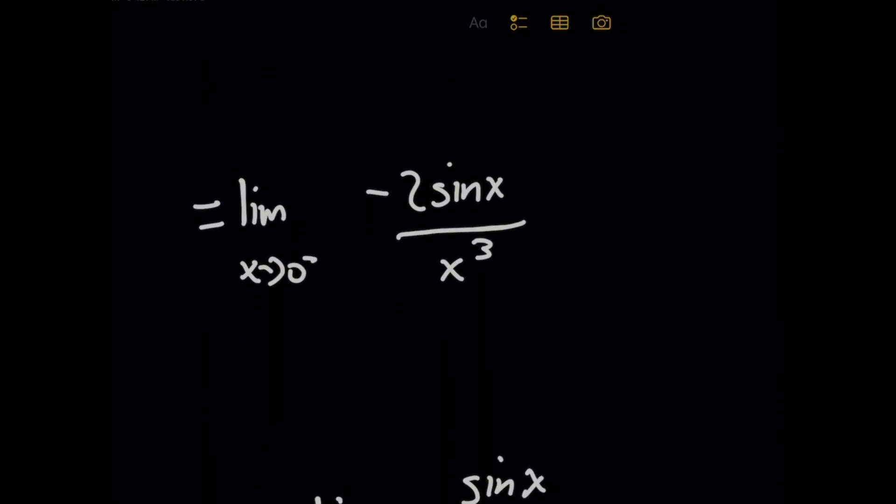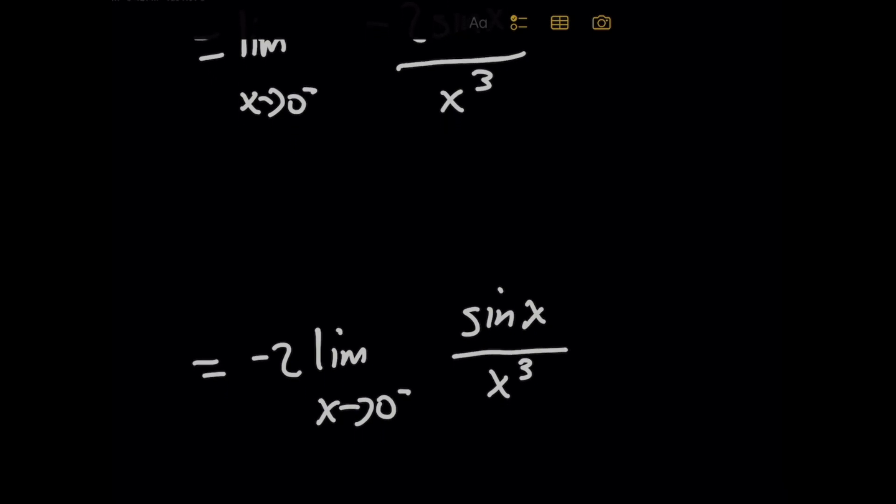And remembering that with the rules of limits, I can take this negative 2 and bring it outside of the limit, giving me a fraction here, which is going to be sine of x over x cubed. And oh, that's a little weird. We're kind of stuck here, right? What do we do? I mean, this is a little frustrating.